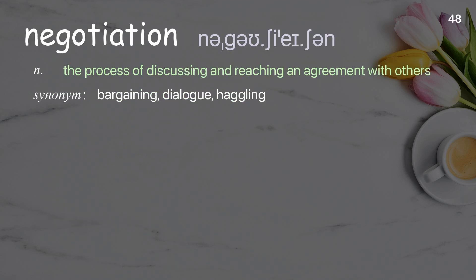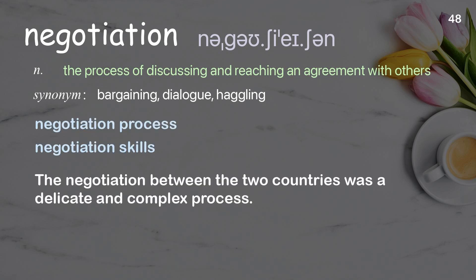Negotiation: The process of discussing and reaching an agreement with others. Examples: Negotiation process. Negotiation skills. The negotiation between the two countries was a delicate and complex process.